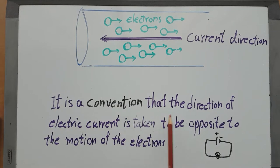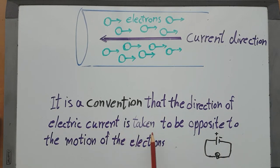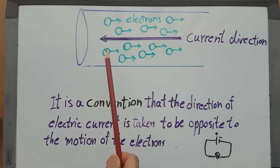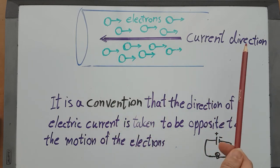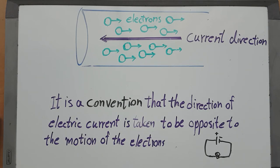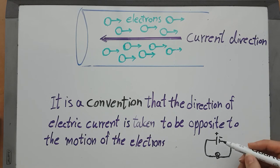It is a convention that the direction of electric current is taken to be opposite to the motion of the electrons, as you can see in this image. Electrons are going this way, but the current direction is this way. It's just a convention, and it's a decision that has been made, and it's not causing any trouble in solving problems and formulas.